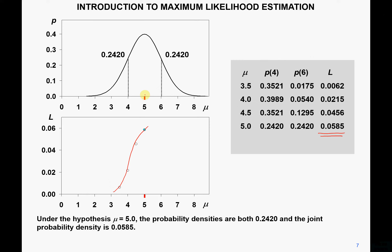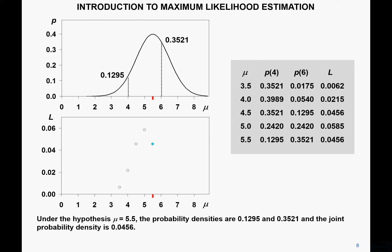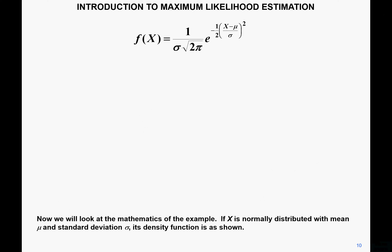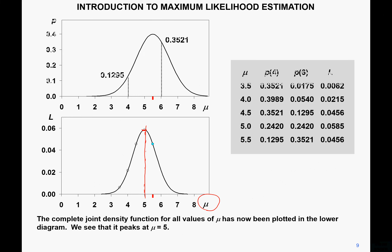Now if we shift mu further to 5.5, this number is less than 0.0585, so the likelihood function begins to decrease. The complete joint density function for different values of mu has been plotted in the lower diagram — we see the peak is at mu equals 5. This is maximum likelihood estimation.